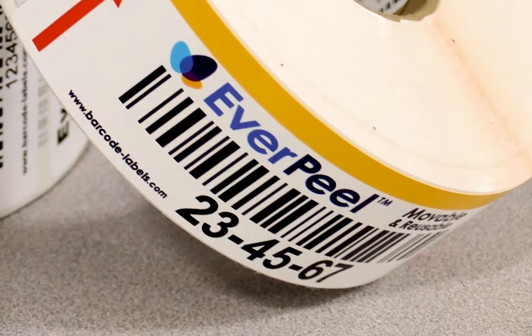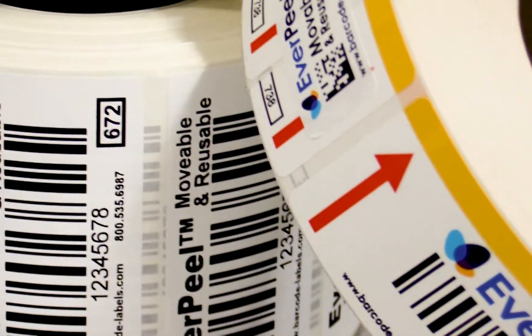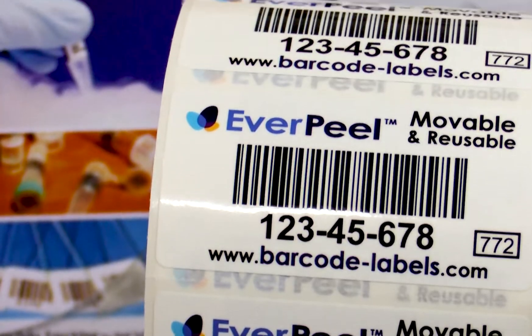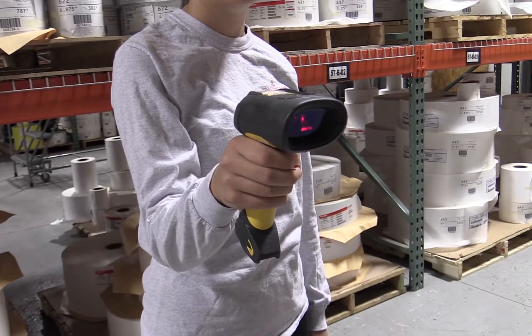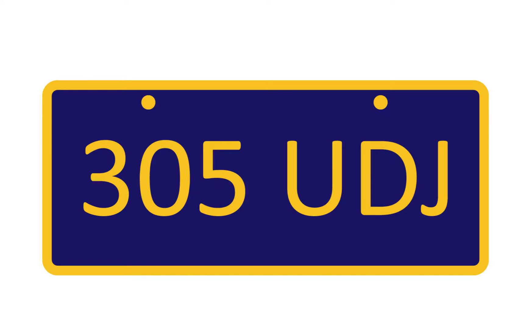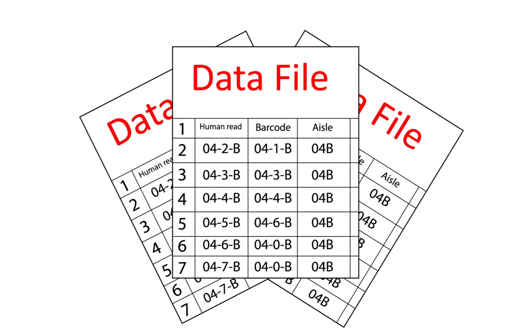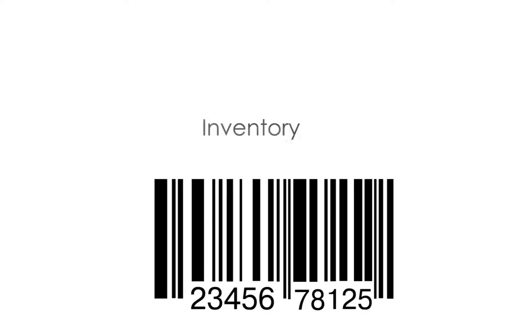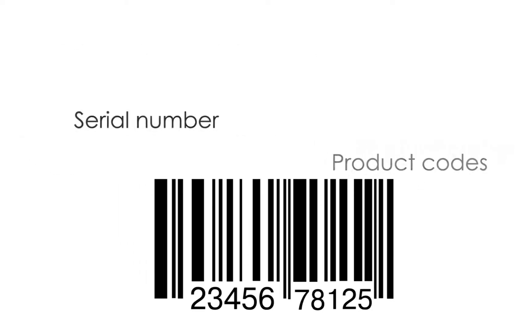Here's an easy way to understand how barcodes work: think of them as a more technologically savvy way to transfer strings of characters. They're basically a license plate for data files. Barcodes can carry various information rather than manually writing down the information.